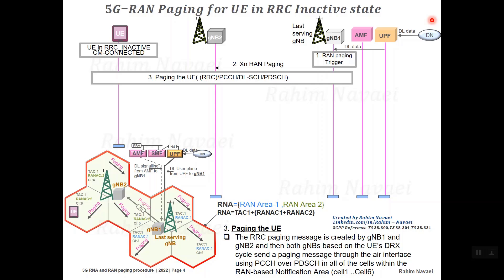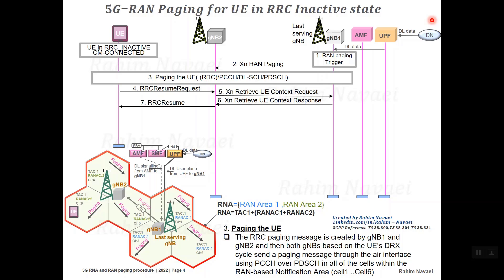Since the UE is in cell 6 of gNB2, an RRC Resume Request in response to the paging message is sent to gNB2. gNB2 checks the I-RNTI — the UE identity in the RRC Resume Request message — and finds the last serving gNB in order to retrieve the UE context. An Xn Retrieve UE Context Request is sent, and gNB1 as the last serving gNB sends back the response to gNB2. gNB2 then prepares the RRC Resume message and sends it to the UE.